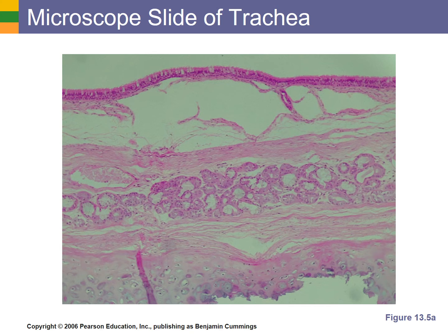Deep to that we have the submucosa. The submucosa contains glands as you can see. The submucosa makes up the lamina propria. And then here we have cartilage — remember the outer layer of rings of cartilage of the trachea.